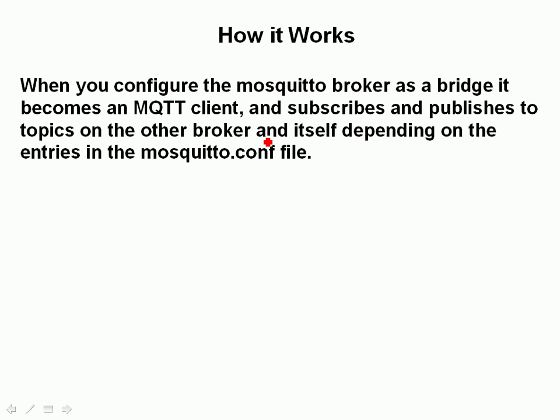How does it work? When you configure a Mosquitto broker as a bridge, it becomes an MQTT client, and it subscribes and publishes topics on the other broker — the remote broker — and also on itself, depending on the entries you make in the Mosquitto configuration file.